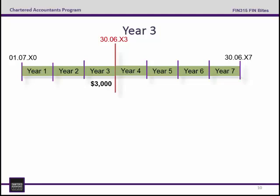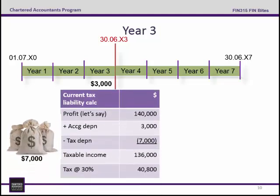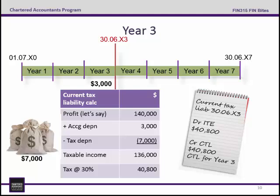Now let's jump ahead to year three. Remember the timeline showing that the temporary difference was increasing up to the end of year three, because at that point the asset would be fully depreciated for tax purposes but still has four more years left for accounting purposes. Looking at our current tax liability calc first — let's assume a $140,000 profit. We add back accounting depreciation of $3,000 and subtract the depreciation deduction of $7,000. Taxable income is $136,000, giving a current tax liability of $40,800. The journal entry is debit income tax expense, credit current tax liability $40,800.